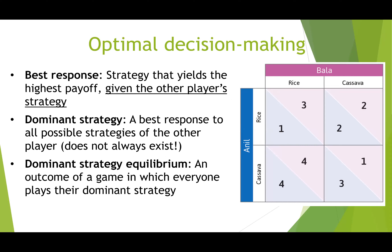Given the other player's strategy, you pick the response with the highest payoff. If Bala chooses rice, Anil has to choose between rice or cassava — four is bigger than one, so Anil chooses cassava. If Bala chooses cassava, Anil will also choose cassava to maximize his payoff of three. A dominant strategy is the best response to all possible strategies of other players — you can stick to that strategy regardless of what others play.